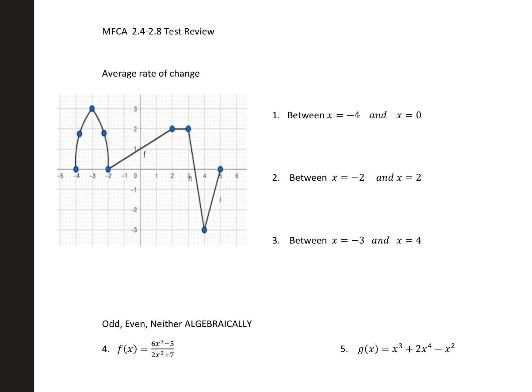Test number two review is going to be 2.4 to 2.8. We're going to start with finding the average rate of change using the graph. For number one, we want to find the average rate of change between x equals negative 4 and x equals 0.